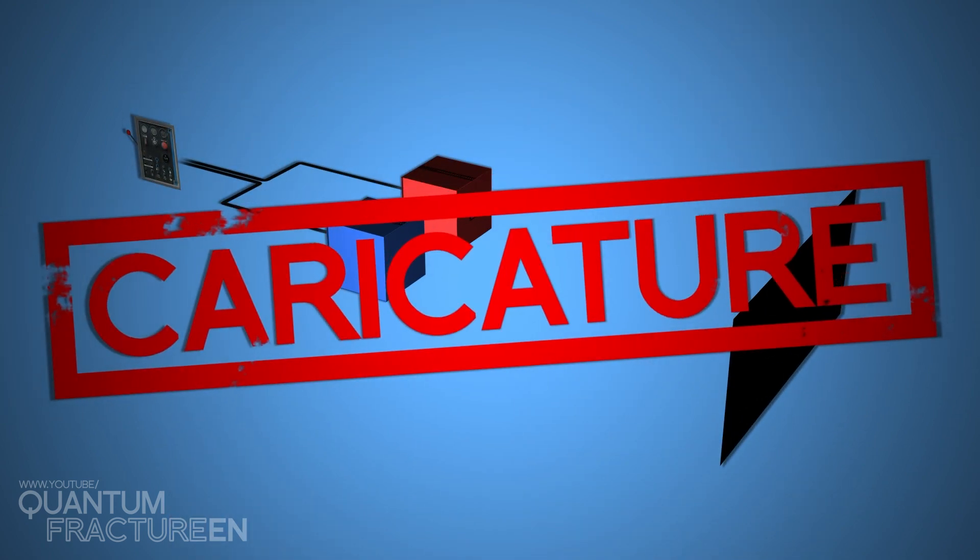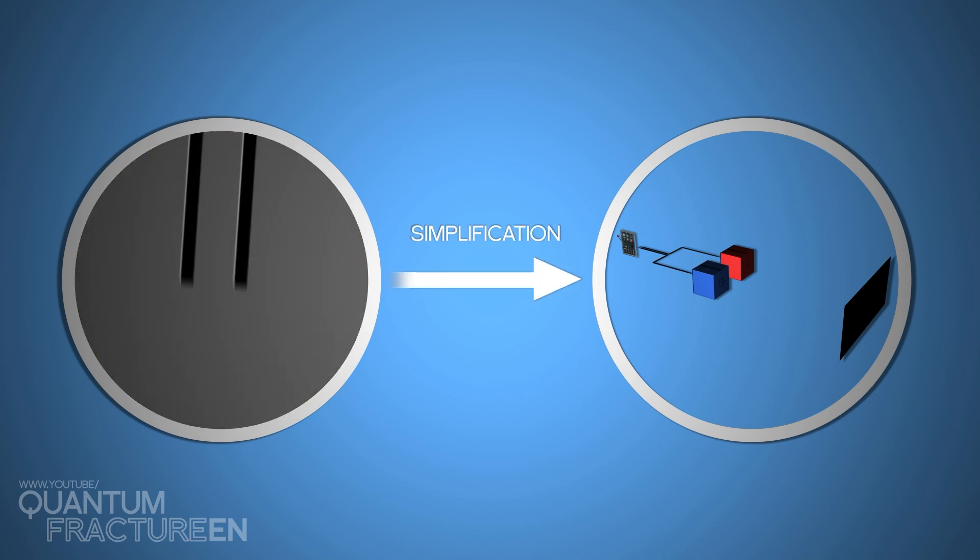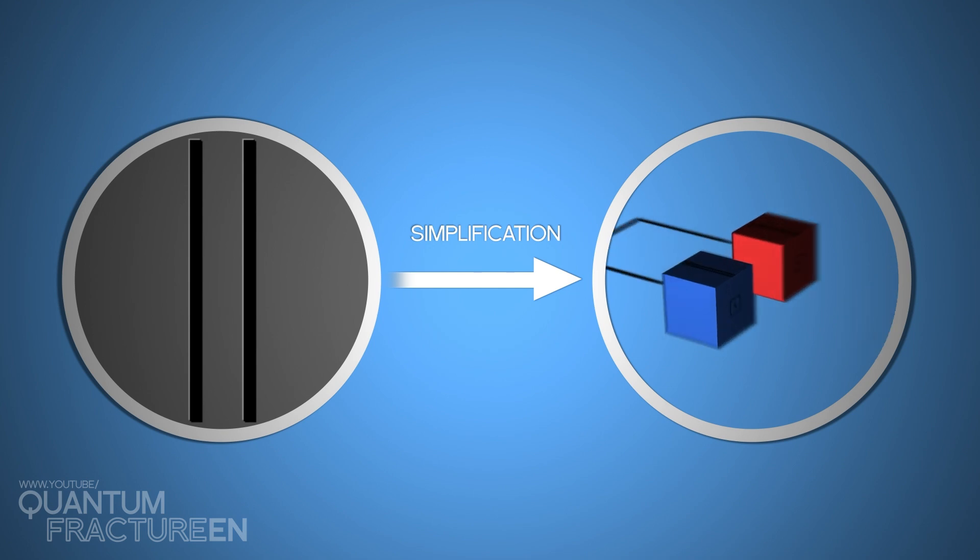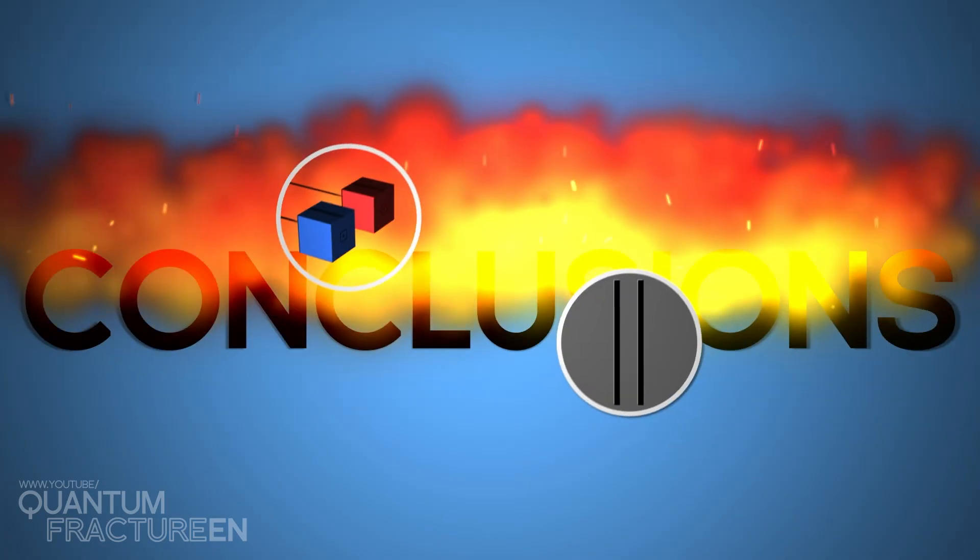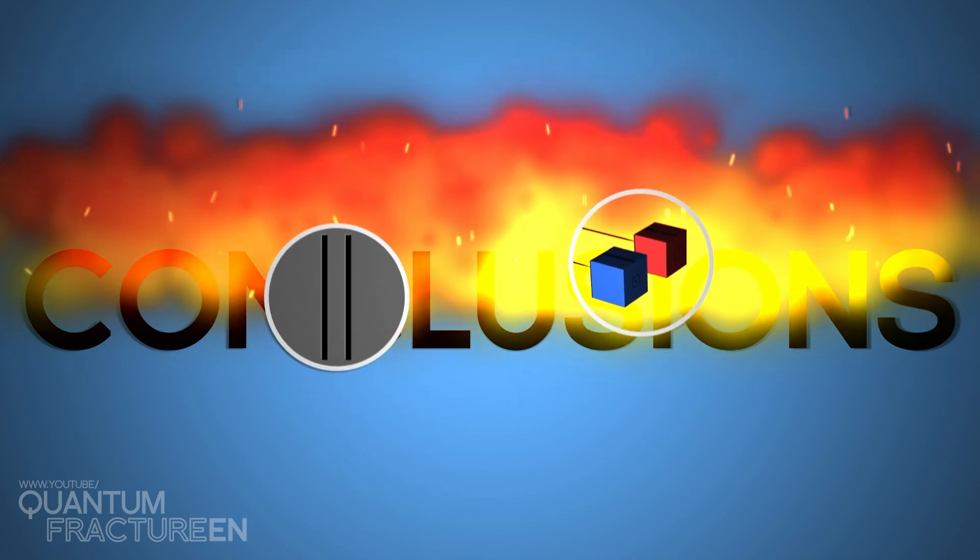Of course, this is just a caricature of the real experiment. We cut out all the technical jargon and reduced the setup to the most basic conceptual level. For instance, instead of a wall with two slits, here we have two boxes. In any case, the conclusions we're going to reach – trust me on this – are the same as those of the real experiment.